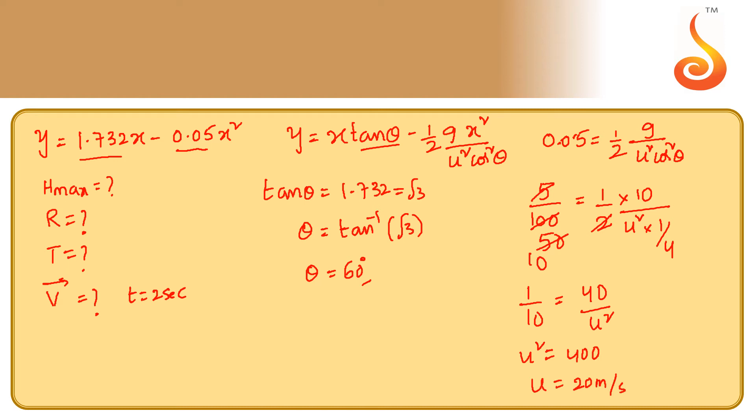We have calculated the angle at which the projectile is projected, which is 60 degrees, and we also calculated the initial velocity, which is 20 meters per second. Now we need to calculate the range, maximum height, time of flight, and velocity at 2 seconds.